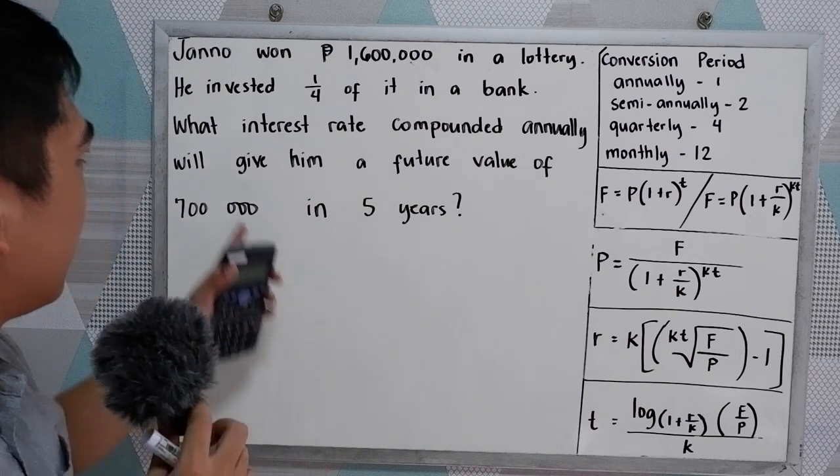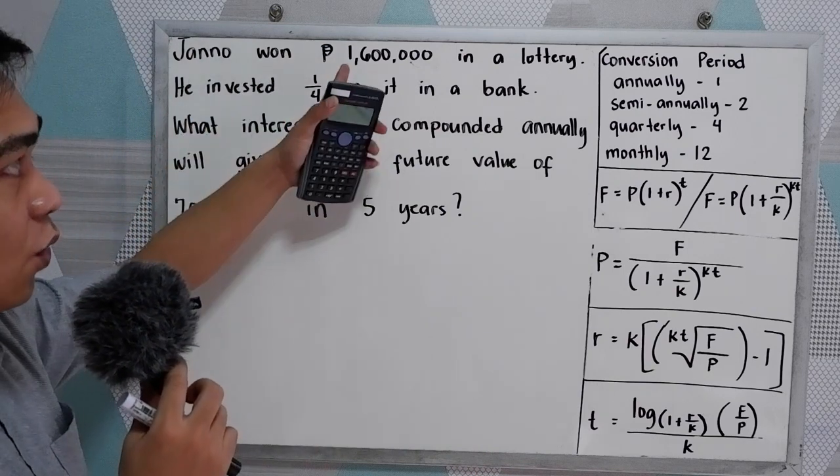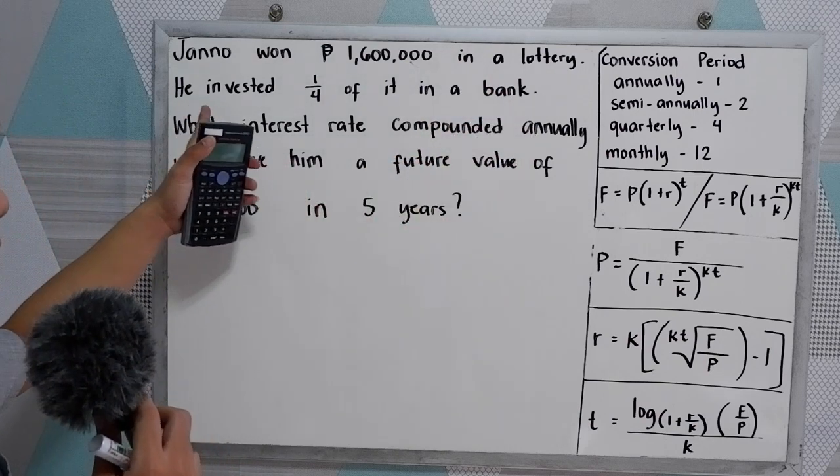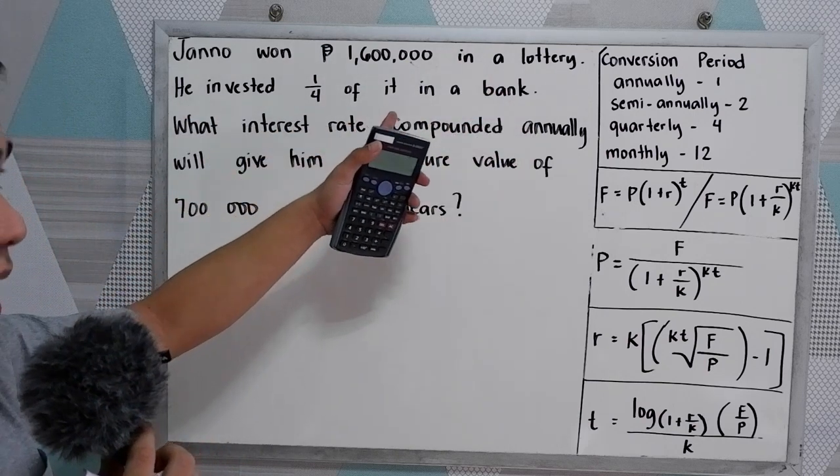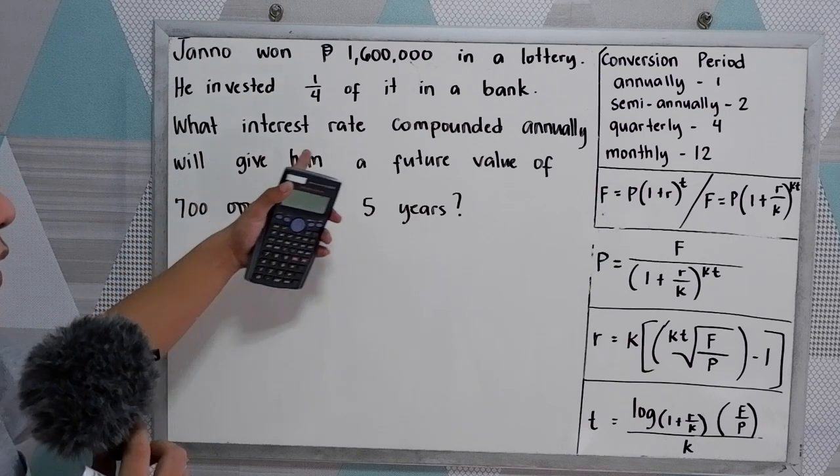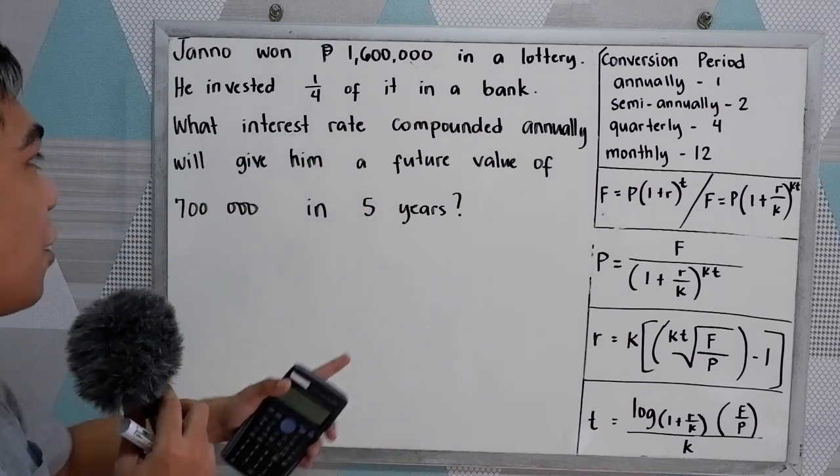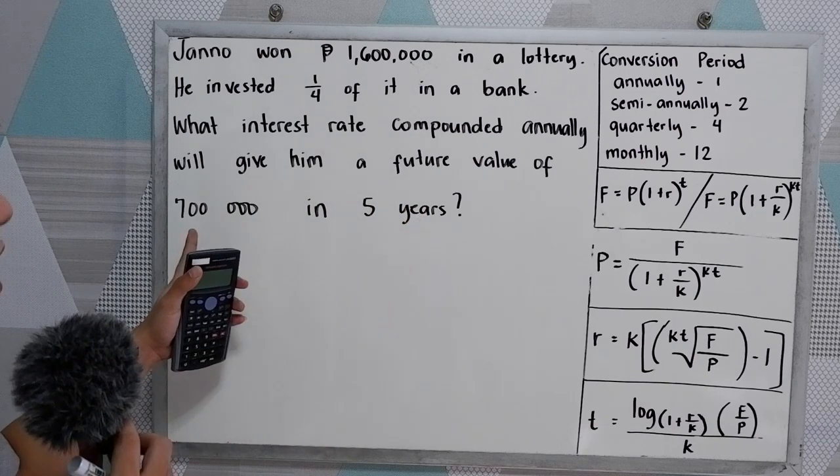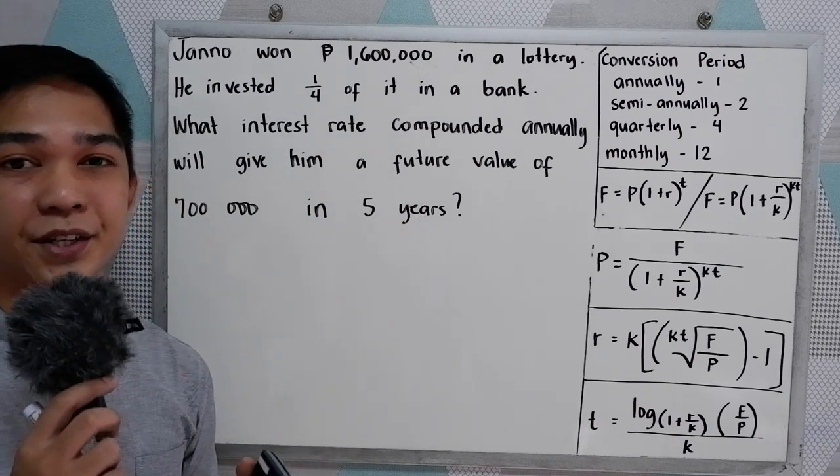The problem is: John won 1,600,000 pesos in a lottery. He invested one-fourth of it in a bank. What interest rate, compounded annually, will give him a future value of 700,000 in five years?